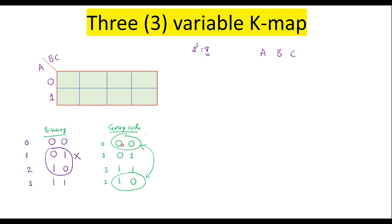In KMAP we will use Grey code representation. Now let me give the cell numbers. Here it is BC, and following Grey code I will assign: 0 0, 0 1, 1 1, and 1 0 to the columns. Combining with row A (0 or 1), the cell decimal numbers are: 0 0 0 = 0, 0 0 1 = 1, 0 1 1 = 3, 0 1 0 = 2, 1 0 0 = 4, 1 0 1 = 5, 1 1 1 = 7, and 1 1 0 = 6.